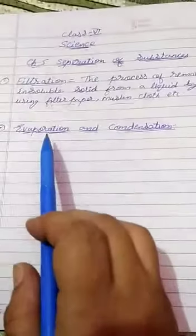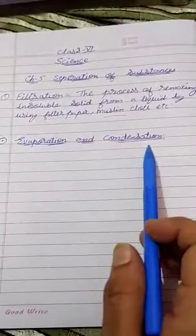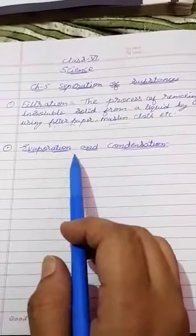Now the next method that we are going to do is evaporation and condensation. You have studied this method in your previous class also. Now what is evaporation? It is conversion of a liquid into its vapour.